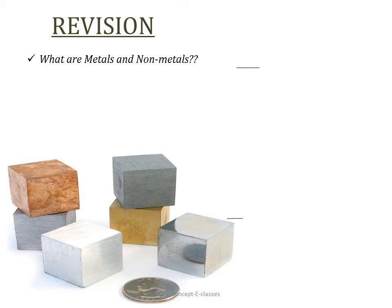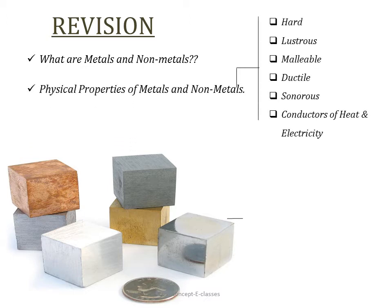We studied that metals can be distinguished from non-metals based on certain properties. Metals are hard, lustrous, malleable, ductile, sonorous, and good conductors of heat and electricity. Non-metals are soft, dull, not malleable, not ductile, not sonorous, and poor conductors of heat and electricity.